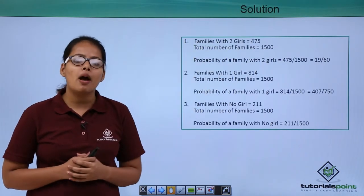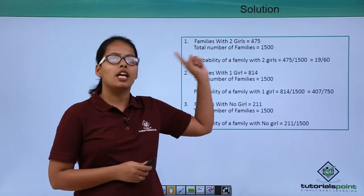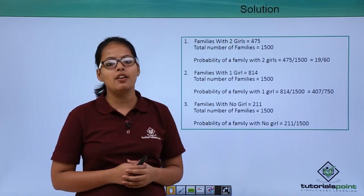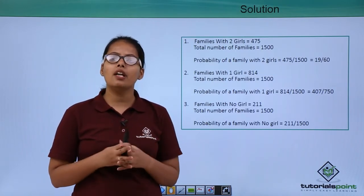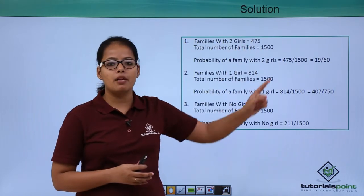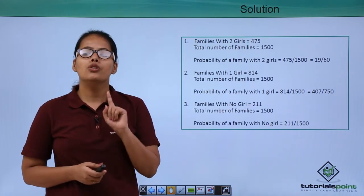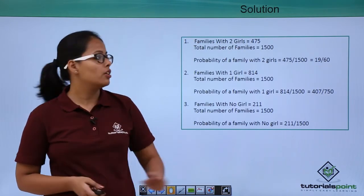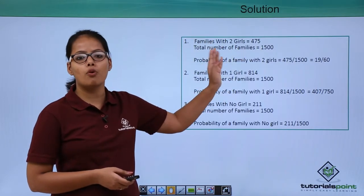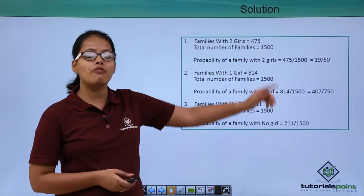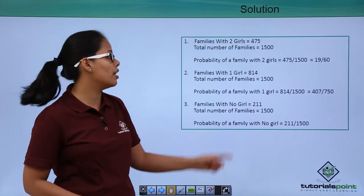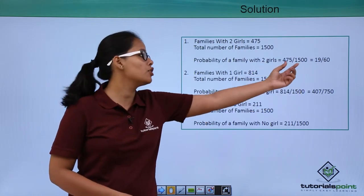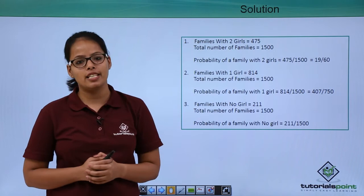Families with two girls — how many families are there with two girls? You can see from the data it is 475, and the total number of families is 1500. The number of ways that event occurs is 475, since we need to choose only those families who have two girls. So the probability of a family having two girls will be 475 divided by 1500, which simplifies to 19/60.